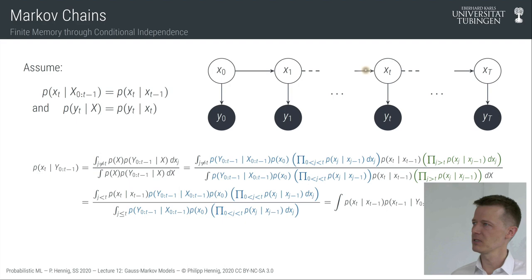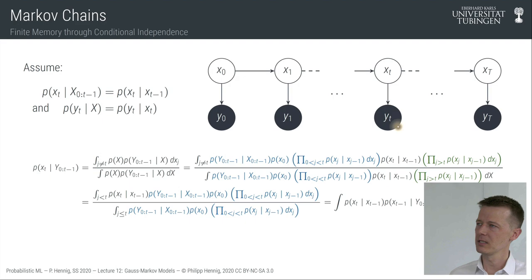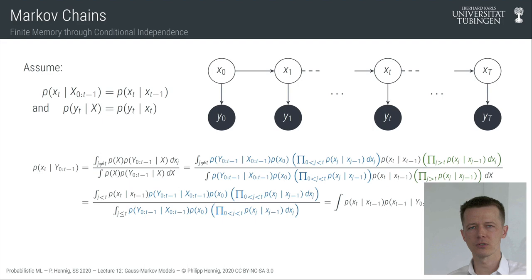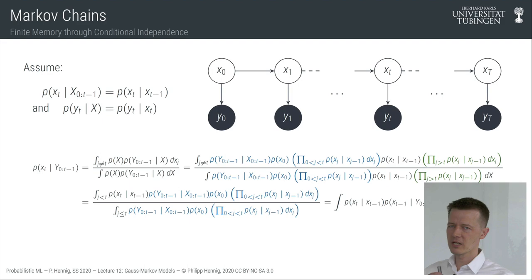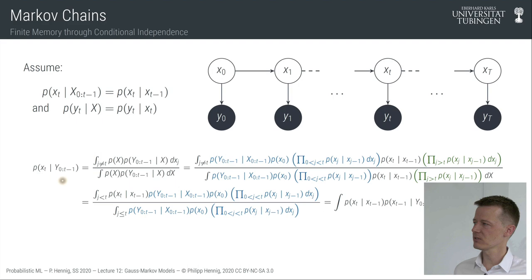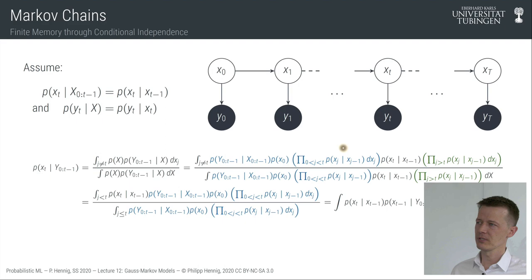Let's see what structure this causes in our inference procedure. The typical thing you want to do is that you're at a particular point in time, you have already collected data up to t. I'll use this notation to denote data from all times t0 up until t-1. What you typically want to predict is the latent state x_t. Then you get one more observation y_t and want to update what you know about x_t given that new observation. Then you want to predict the next state x_{t+1}.